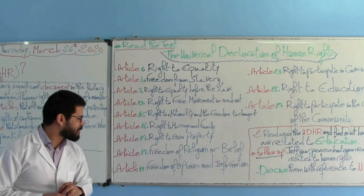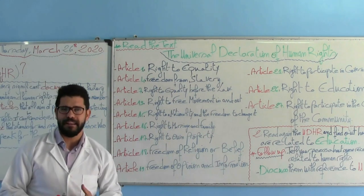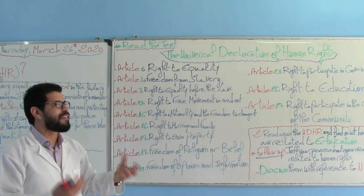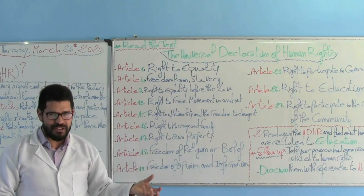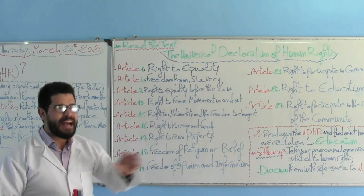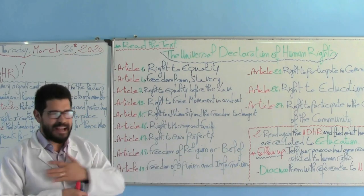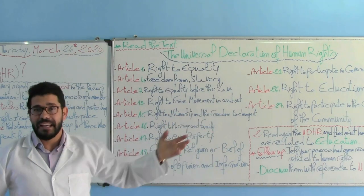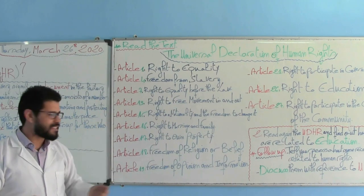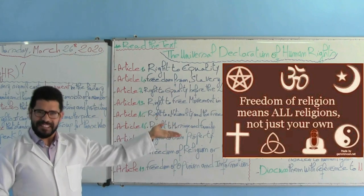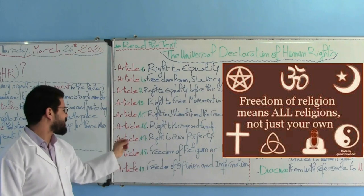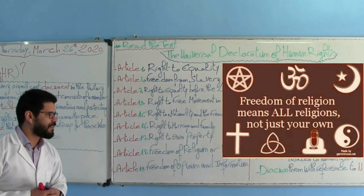Article number 18: Freedom of religion or belief. I'm Muslim and I'm proud of being a Muslim. I believe in the peaceful message and peaceful principles of this religion. But it doesn't necessarily mean all citizens of the universe have to believe in Islam. Other people believe in Christianity, maybe others in Judaism. Other people are atheists — they are disbelievers. So we need to respect each other when it comes to religions. This picture best matches Article number 18, freedom of religion or belief.